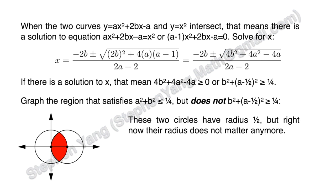We know that these two circles have radius one half, but the radius doesn't matter anymore because when the radius is multiplied by x, the area of the circle multiplies by x squared and the red region also multiplies by x squared — their ratio stays the same. So we can choose a radius that makes calculation easy.